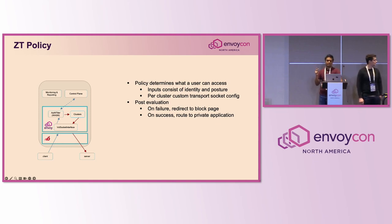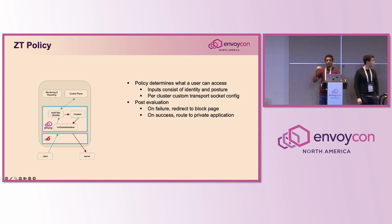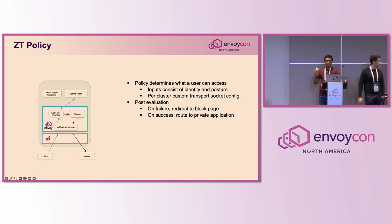The two inputs to policy evaluation are identity — obtained via the IDP — and posture, which is the web browser being used, the operating system, and so forth. Once the policy runs, the control plane gives a verdict to the auth filter saying whether the user is allowed or blocked. If allowed, we inject metadata into the filters and connect them to the private application; otherwise we send them to a block page.